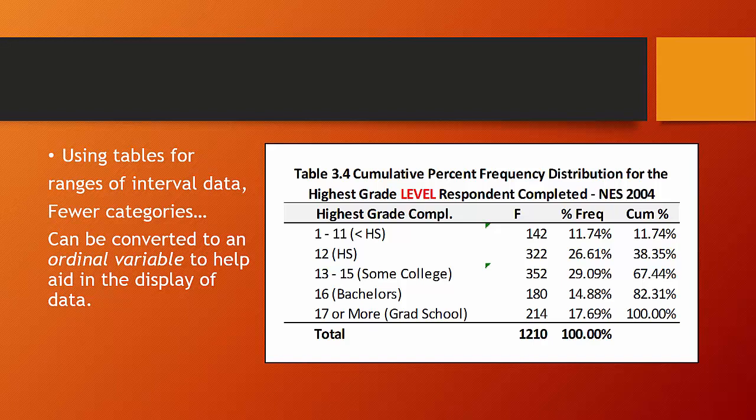I've taken all of the categories that went from 1 to 11 and called it a value of less than high school. And you can see that I have 142 observations who had less than high school education of 1,210 total observations. That's 11.74%.